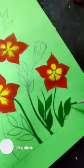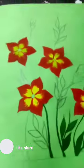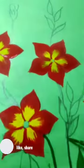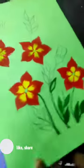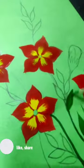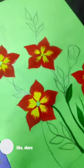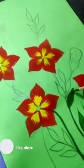If you like the symbol, you can add a painting. You can add paint on the leaves and then paint a dark green paint.